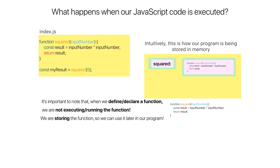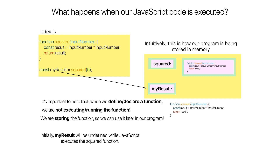Now we can run the last line of code. There's a left-hand side and a right-hand side of the assignment. On the left-hand side, we are creating a variable called my_result. Initially my_result will be undefined while JavaScript executes the squared function — the value stored there is undefined for now.